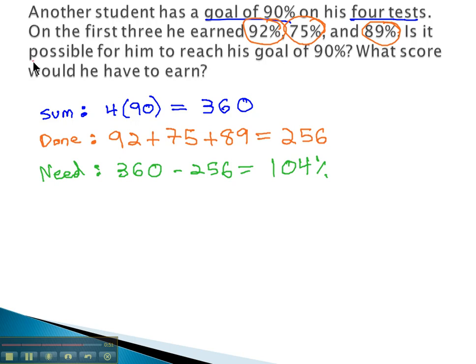Question asked, is it possible for him to reach this goal of 90%? It's probably not possible because he's probably not going to get 104% without, we'll say, 4% extra credit.